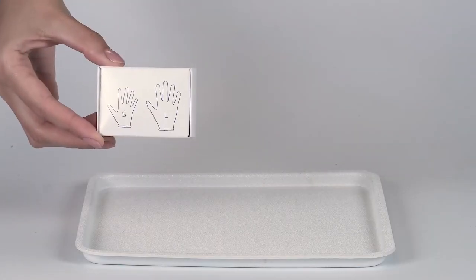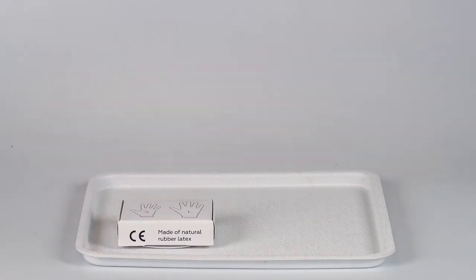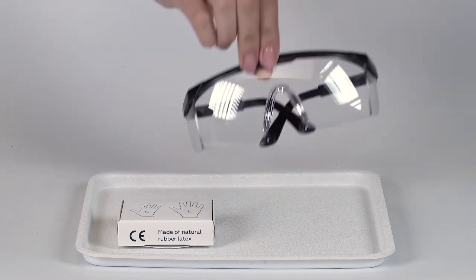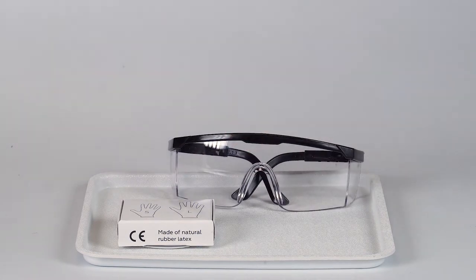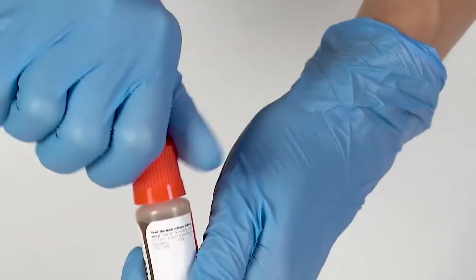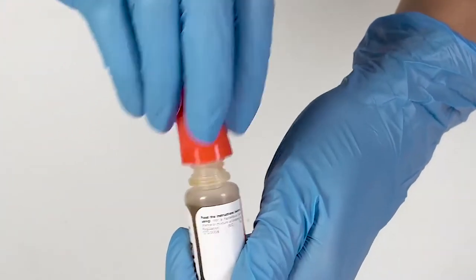Perform this experiment on a plastic tray to contain any possible spills. Don't forget to put on protective gloves and goggles before doing the experiment. To open a bottle containing a reagent, push the cap down and turn it.